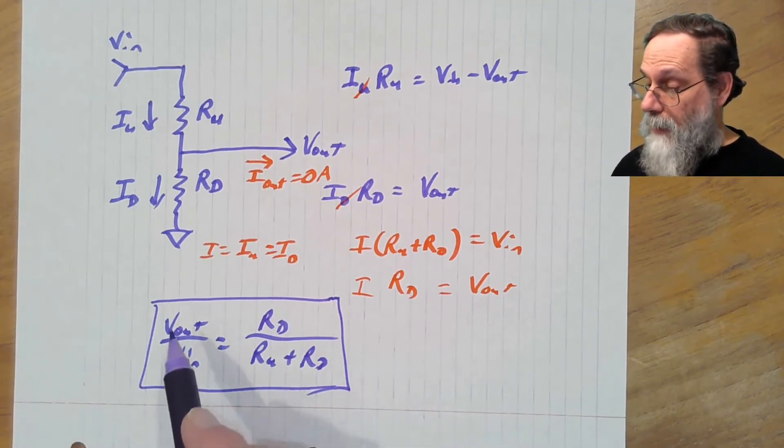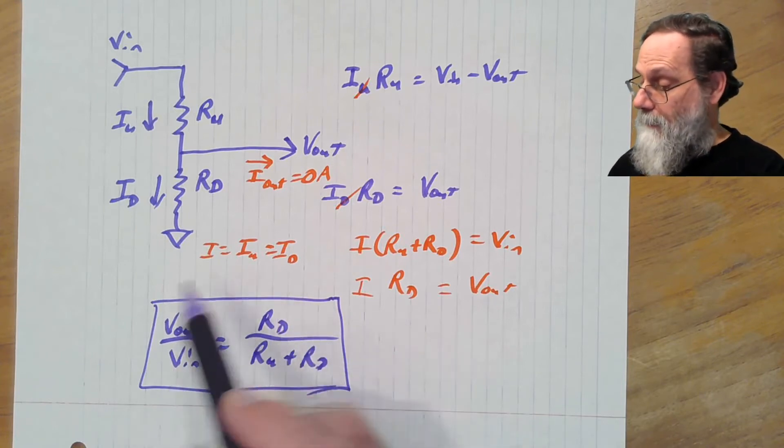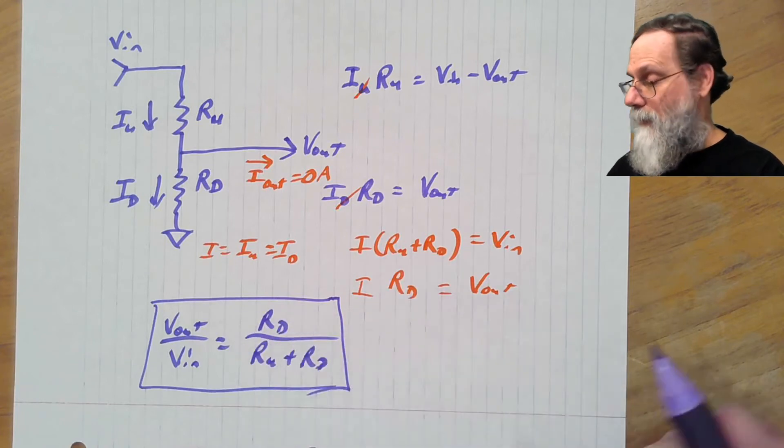This is one way of writing the voltage divider equation. Basically, it says that we can divide the voltage. That is, take whatever Vin is and scale it by this amount.